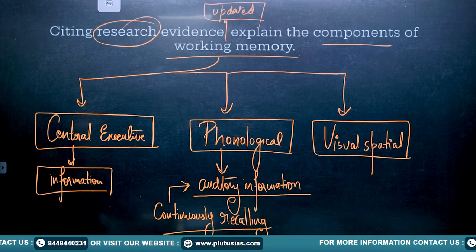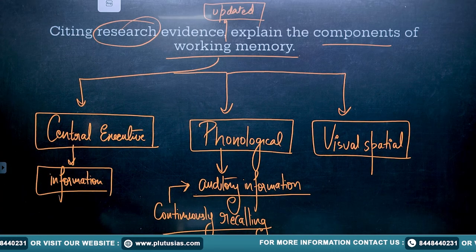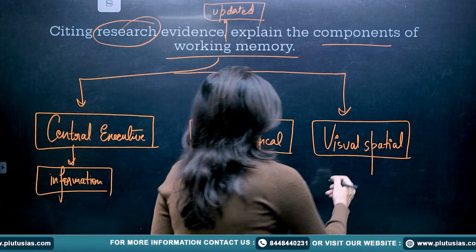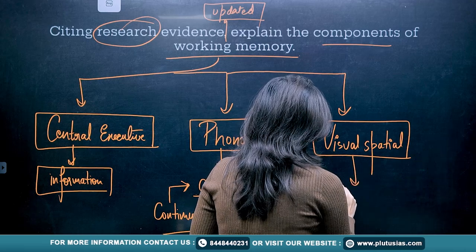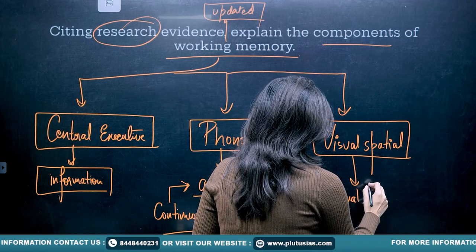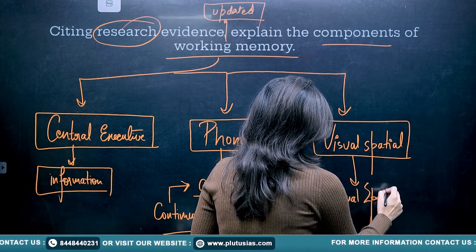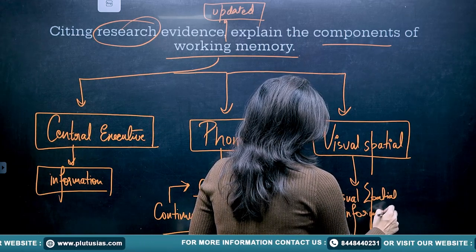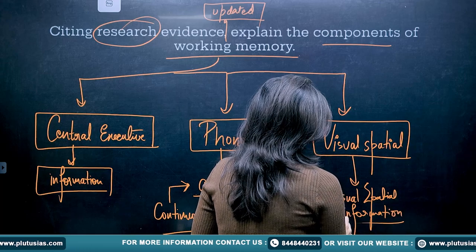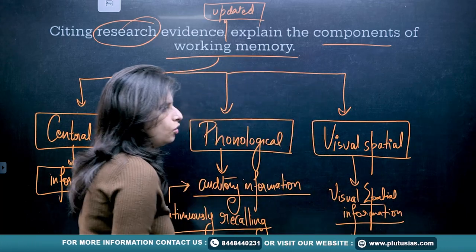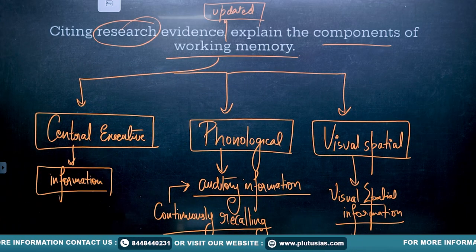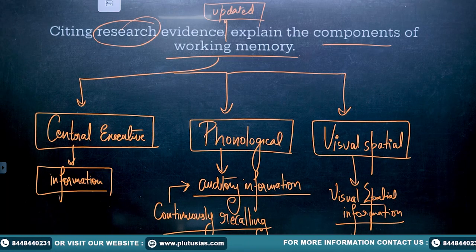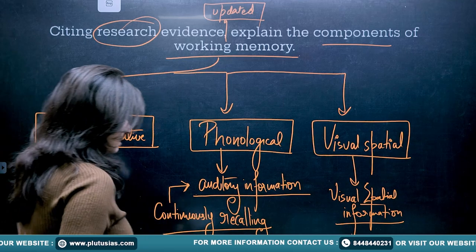The next component is the visual-spatial part. This part is talking about visual and spatial information — whatever you are visualizing or whatever visions you are having, that takes part in your information processing.